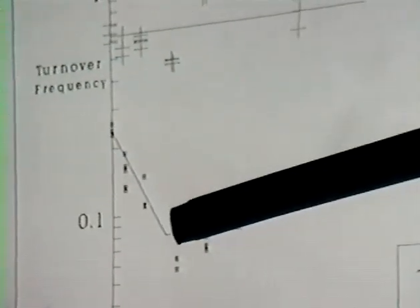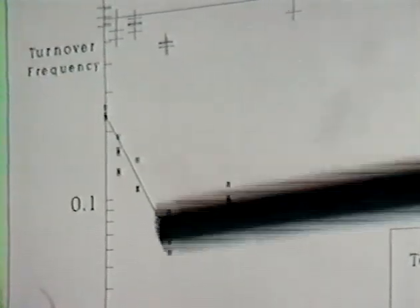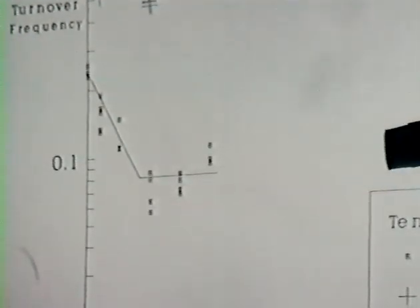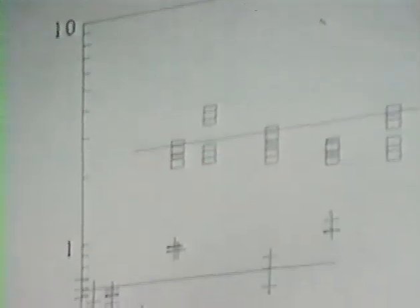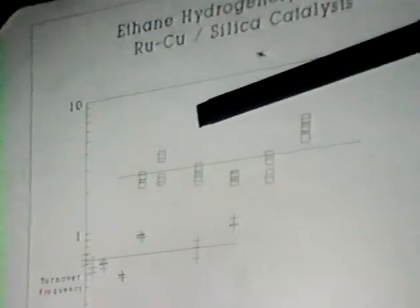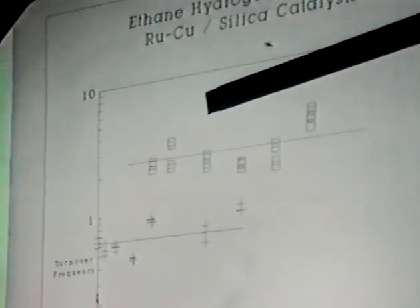Given that information, we can find turnover frequencies. At low temperature, we add a little copper and the rate does decrease until we hit about 10% total copper in the catalyst, then it levels out. At the highest temperature, this level turnover frequency holds — we can add quite a bit of copper and the turnover frequency does not change. Something is happening early on as we add a little copper, and then after a while the turnover frequency stabilizes.